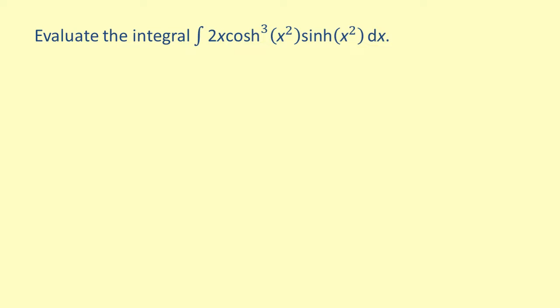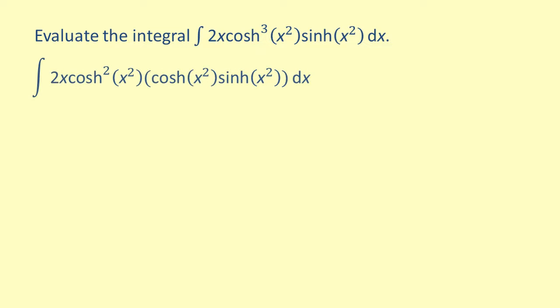So let's decrease the power on the hyperbolic cosine by 1 and rewrite it as a product. Next, we'll set u equal to the square of the hyperbolic cosine of x squared.